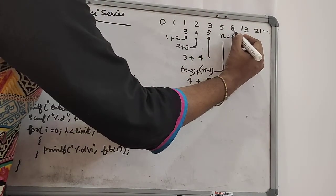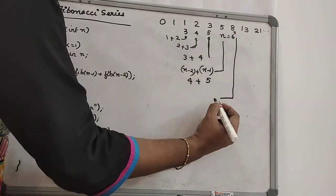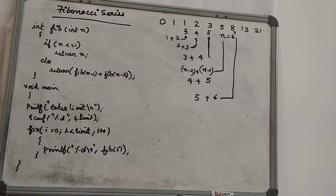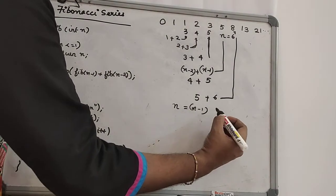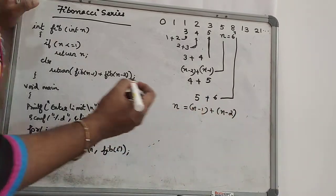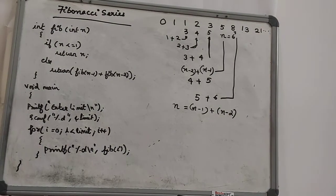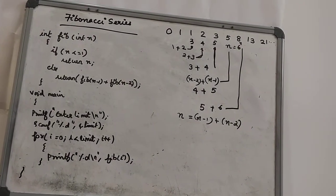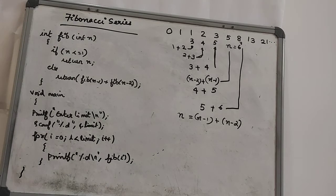For position 7, we take the n minus 1 (6th position) value and add it to the n minus 2 (5th position) value to get the result. This is the logic of the Fibonacci series: the first element is 0 and 1, then each subsequent element is the sum of the previous two elements.